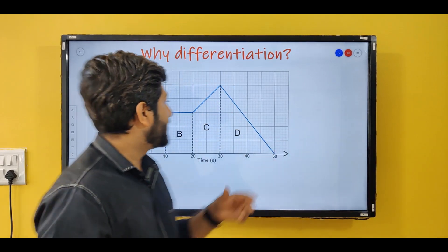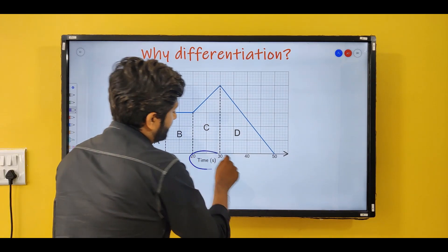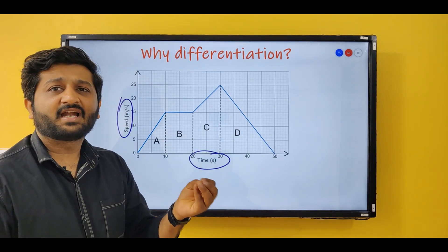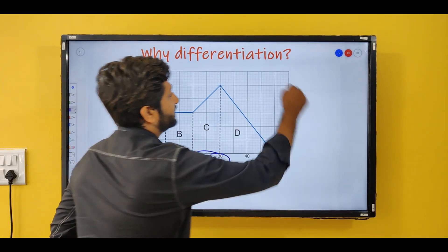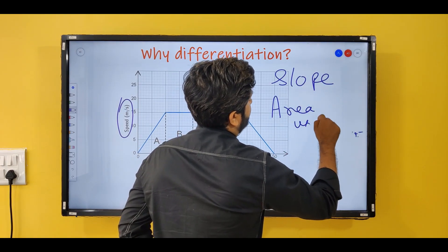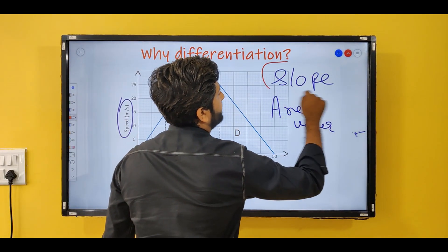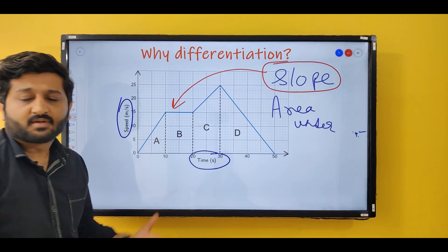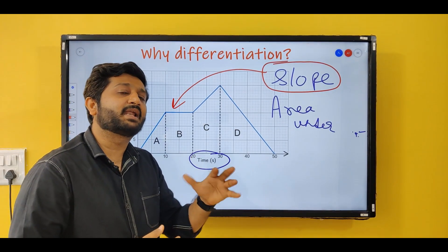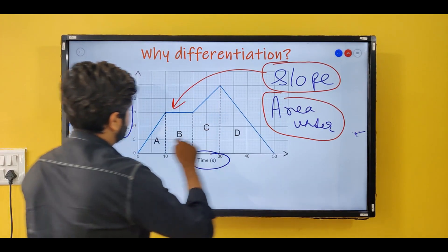For that I have taken a small example. As you can see, this is a speed-time graph of a car journey. In any graph there are two things which are important: the first is the slope of the graph, and the second is the area under the graph. The slope of a speed-time graph gives you acceleration, and the area under the curve gives you distance.